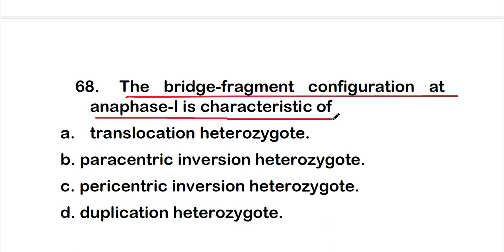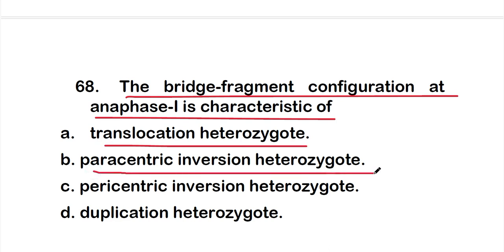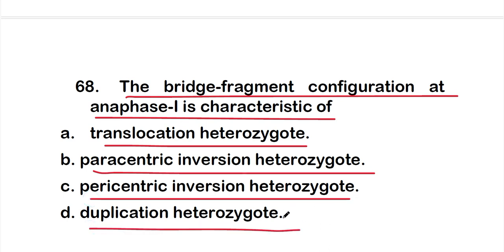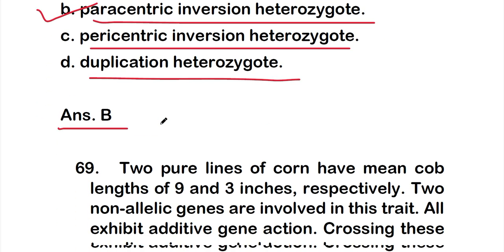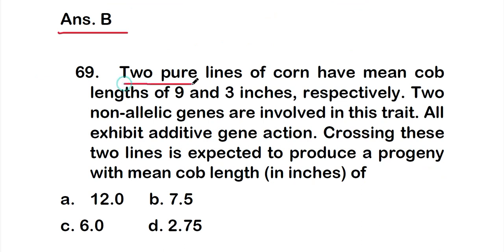Question 68: the bridge-fragment configuration at anaphase I is characteristic of — Option A: translocation heterozygote, Option B: paracentric inversion heterozygote, Option C: pericentric inversion heterozygote, Option D: duplication heterozygote. The right answer is Option B — paracentric inversion heterozygote.